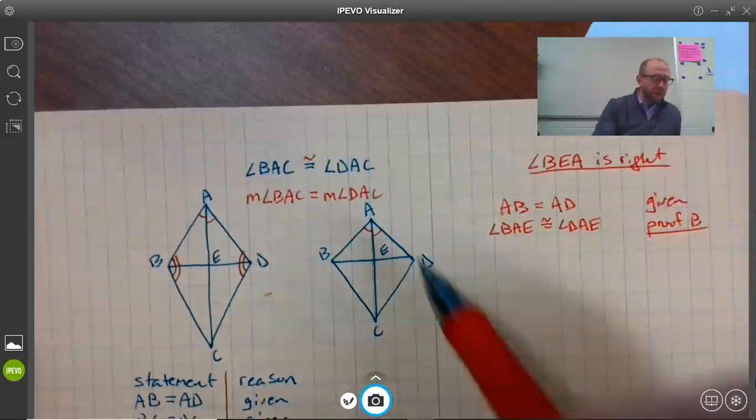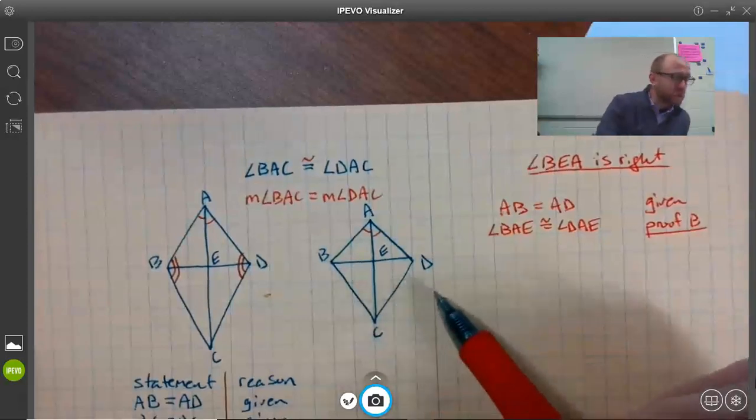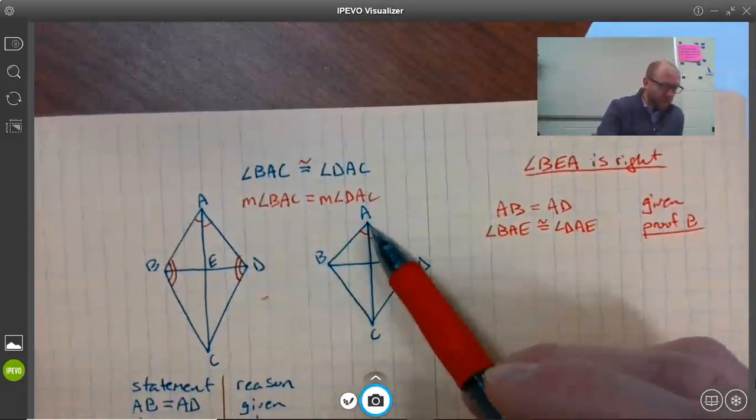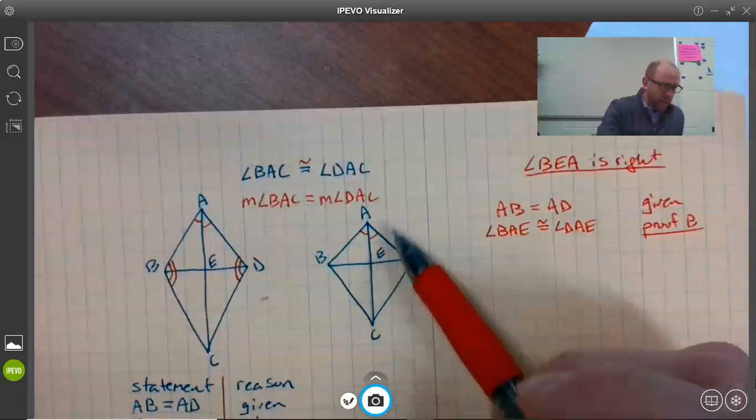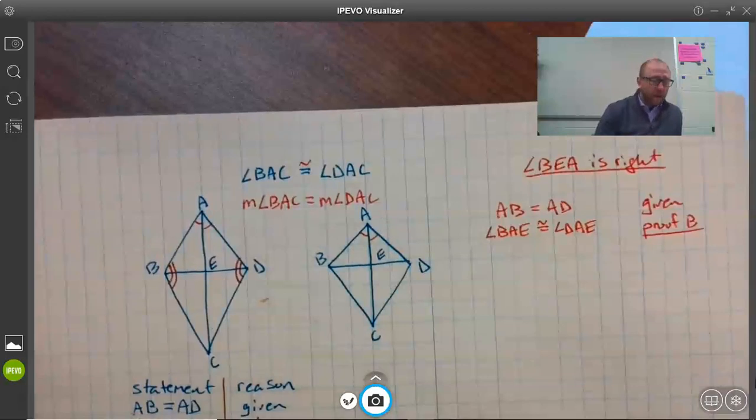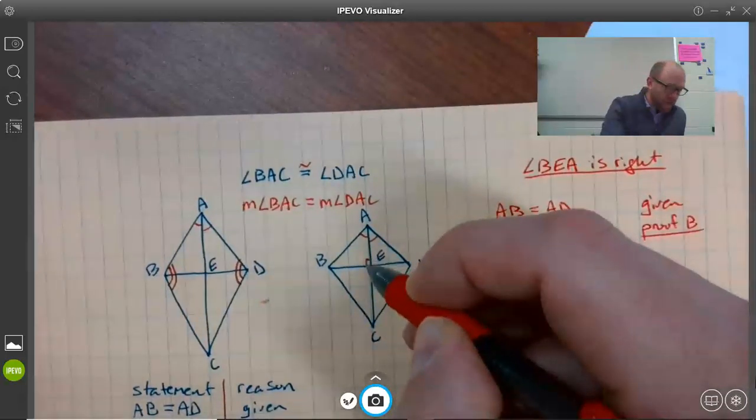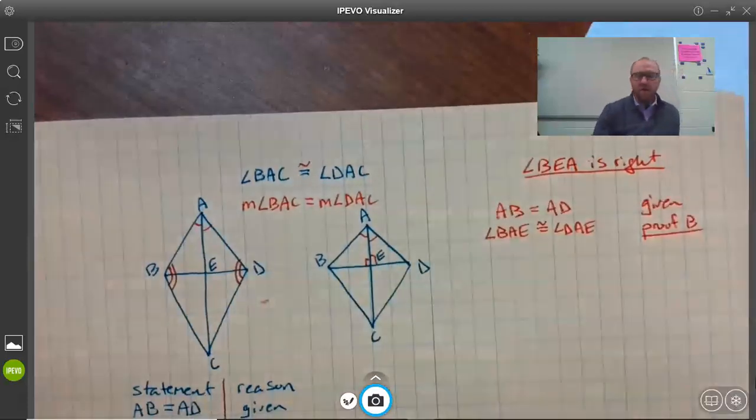We're going to start by showing that two triangles are congruent. Which two triangles? We've got ABE and ADE, these two top corner triangles. So we're going to prove those two triangles are congruent, and then make the additional leap to showing these are right angles.